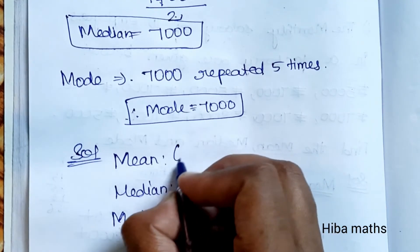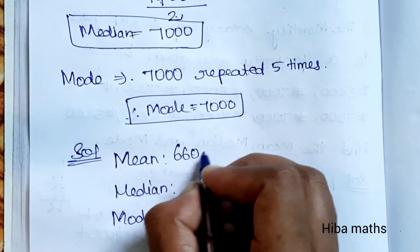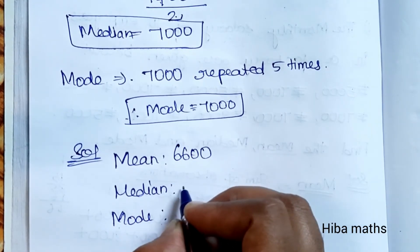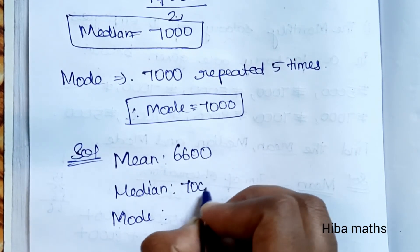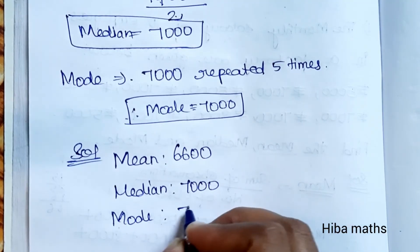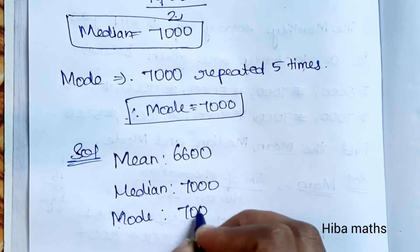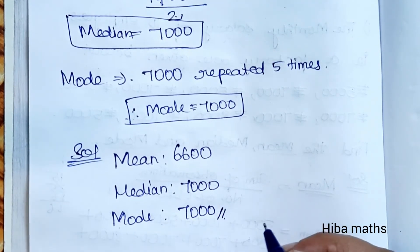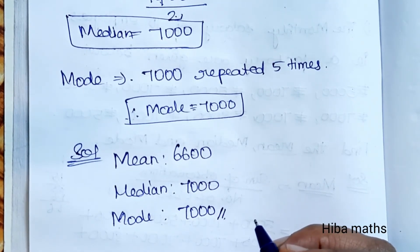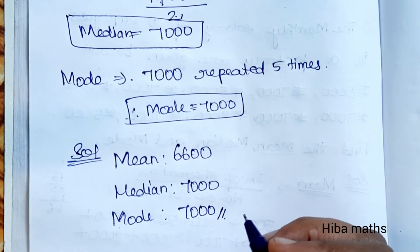Mean is 6,600, Median is 7,000, and Mode is 7,000.